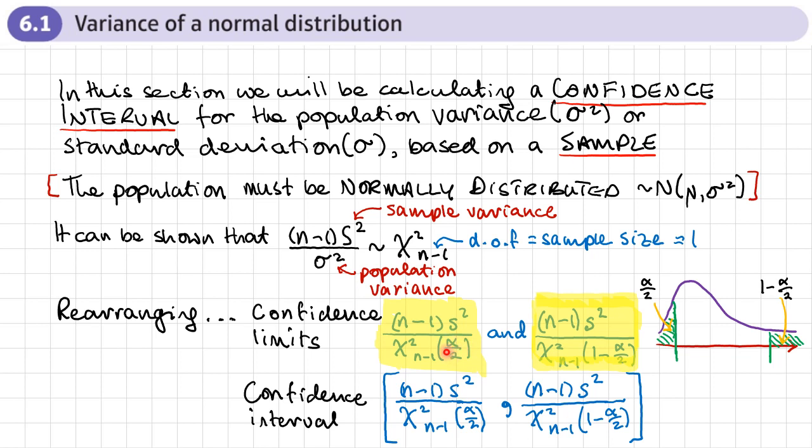Alpha over 2 would just be 5% here, and then this tail here would be 95%. For a 95% confidence interval, you've got 2.5% in the tails, so the values would be 2.5 and 97.5. It's useful to draw a diagram, and then you can see what the areas are on each side.